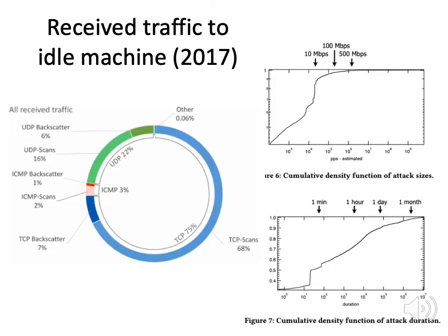In 2017, they looked at an idle machine to see what it receives. About 8% of packets received was UDP backscatter, 16% were UDP port scans looking for vulnerable addresses, ICMP backscatter was about 1%, ICMP scans for vulnerable code was 2%, TCP backscatter (RST, SYN-ACK packets) was 7%, and about 68% was TCP scans — people looking for open services. This is a machine that no one is connecting to and should receive no traffic, yet it's being constantly bombarded. We can also look at the cumulative density function of attack sizes: about 90% of attacks are less than 10^5 packets per second, and about 90% of attacks last less than 10^5 minutes.